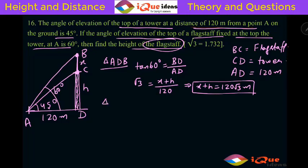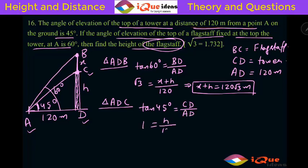Now let's consider triangle ADC — points A, D, and C. In that triangle we take angle 45 degrees, so tan 45° equals the opposite side CD divided by the adjacent side AD. Tan 45° is 1, CD is H, and AD is 120. So from here we can directly see that H equals 120 times 1, that is 120 meters.